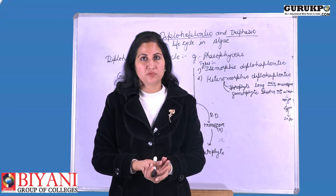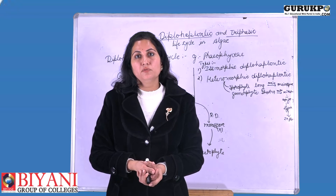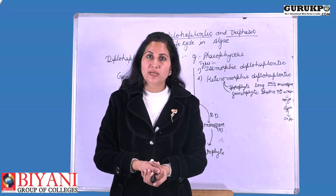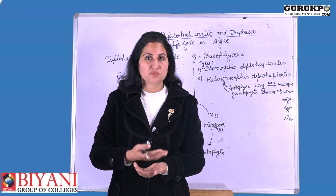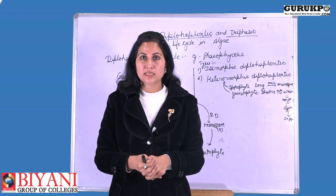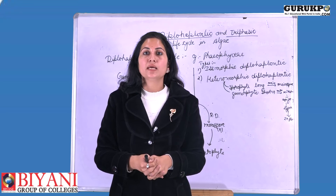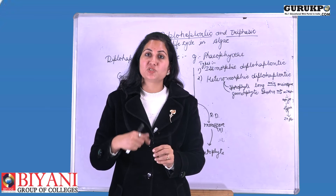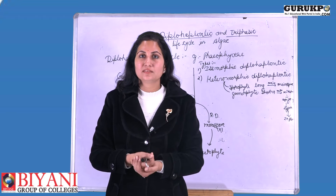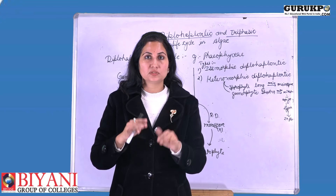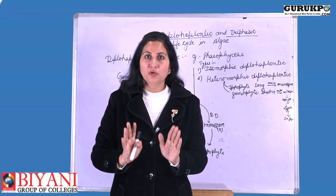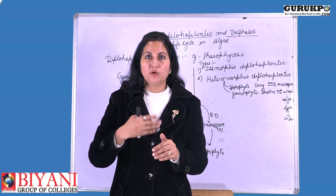In the gametophytic plant, mitotic division occurs and after mitotic division they form two types of gametes — male gamete and female gamete. These two types of gametes fuse, which is known as syngamy. After syngamy they form a zygote, and this zygote germinates and forms again the sporophytic plant. So here we can see that both types of plants are found in one species only and the life cycle is completed only when these two types of plants alternate after each other.